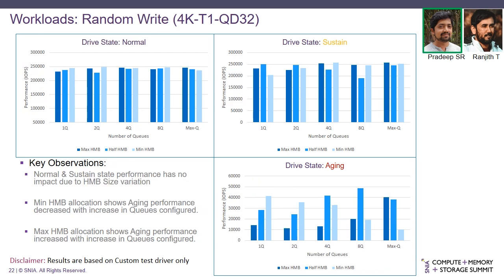In the case of random write with 4K chunk size, 1 thread, queue depth 32, in the normal and sustained states the change in HMB size allocation did not show any significant differences even across all queue configurations. In the aging state, performance dropped drastically across all queue states. Among the queue states, when HMB size was at minimum, performance kept decreasing as queue configuration increased. Whereas in the maximum HMB size case, performance kept increasing with increasing queue numbers.